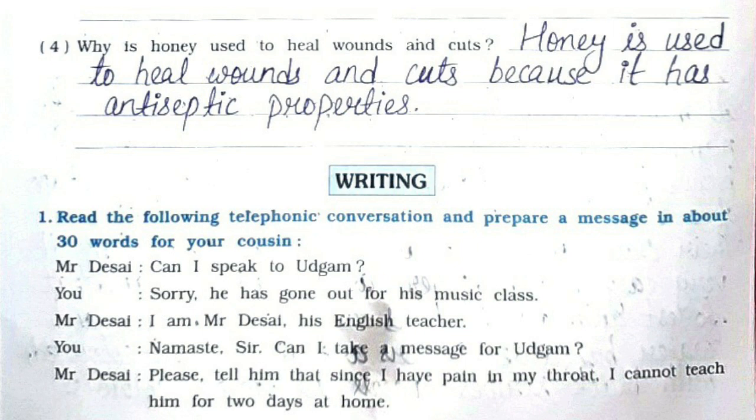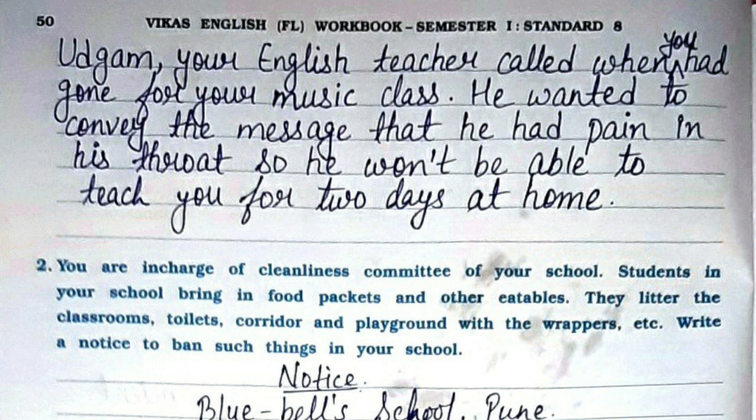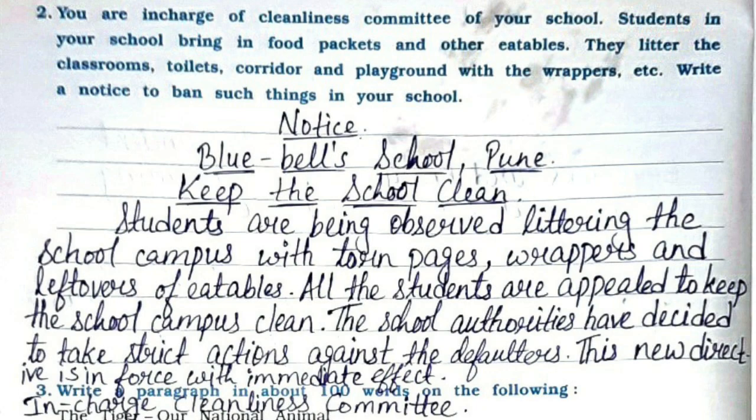Writing Part, Question 1: Read the following telephonic conversation and prepare a message in about 30 words for your cousin. The message is: 'Udgam, your English teacher called when you had gone for your music class. He wanted to convey the message that he had pain in his throat, so he won't be able to teach you for two days at home.'